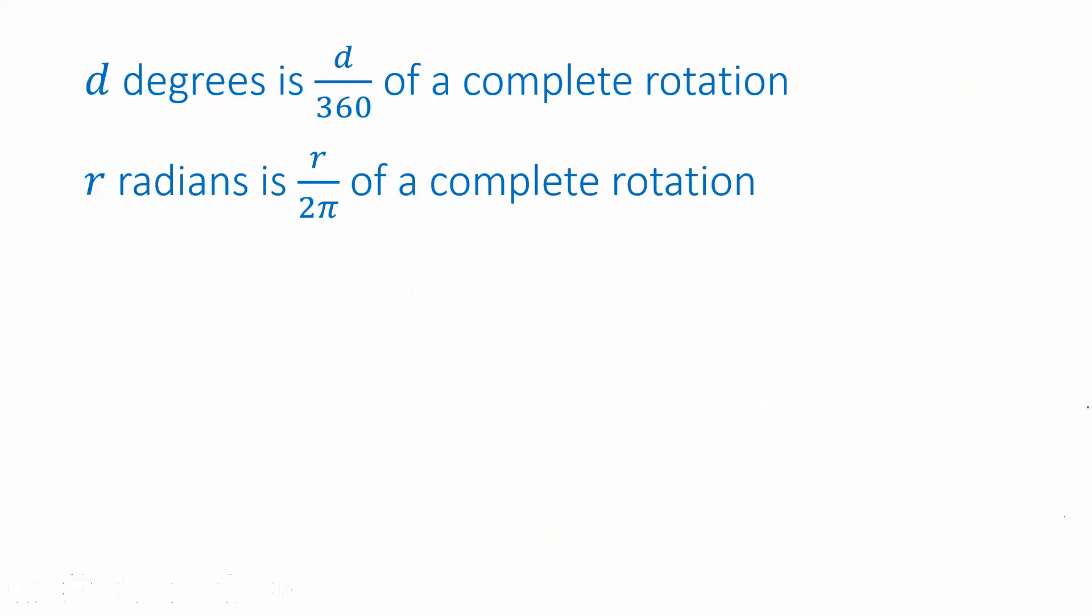Okay, so first of all, remembering that there are 360 degrees in a complete rotation, that means if you have an angle of d degrees—if that's not 360, if it's say less than 360—then that only represents part of a complete rotation. So for example, if you are looking at a rotation of 180 degrees and you plug that into this fraction, 180 over 360, that simplifies to one half. So 180 degrees would be half of a complete rotation.